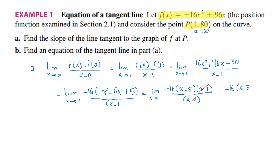Now the limit is going to 1. Since x is going to 1, I can substitute x by 1. I get minus 16 into 1 minus 5, which is equal to minus 16 times negative 4, which is equal to 64. And this is the slope of our tangent.